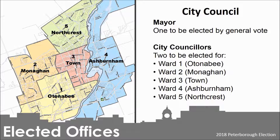The City of Peterborough is governed by a mayor and ten councillors. The City is divided into five wards, and residents of each ward elect two councillors to represent their ward. Electors can vote for up to two councillors on the ballot, but they may vote for only one if they wish. The mayor is elected by general vote, meaning all Peterborough electors can vote for mayor.